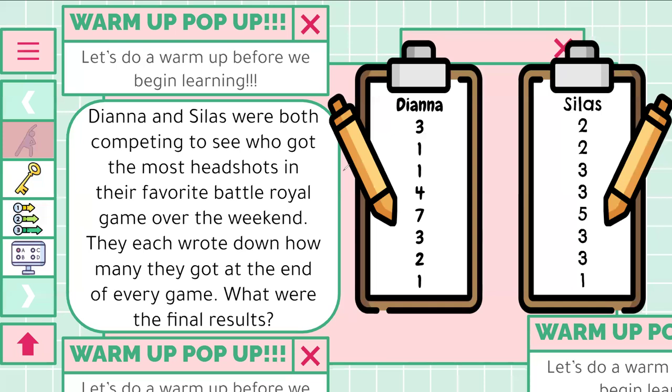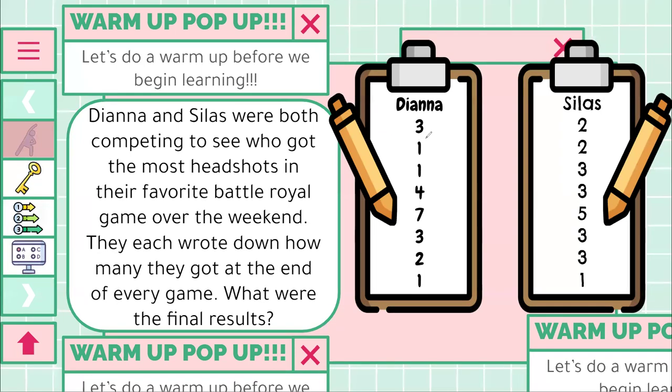All right, doing a check-in, pause if you're not ready. If you first, Diana, chose to do 3 plus 1 plus 1 plus 4 plus 7 plus 3 plus 2 plus 1, you should have gotten 22.